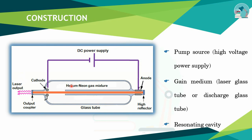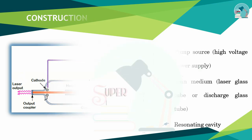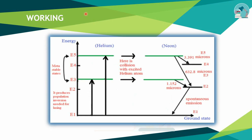The gas medium in this laser is a mixture of helium and neon gas. The helium atoms are excited by the power supply and transfer energy to the neon atoms. The helium provides energy levels that match neon's energy levels, allowing population inversion in neon to produce laser light.